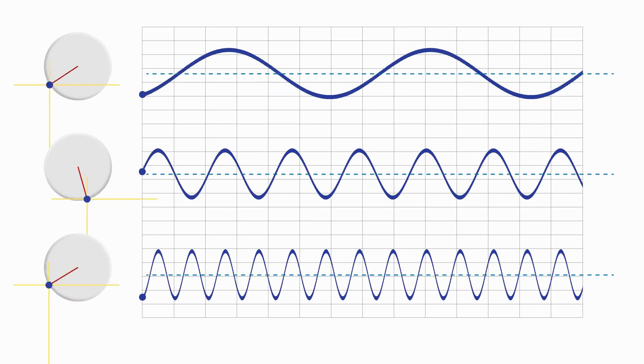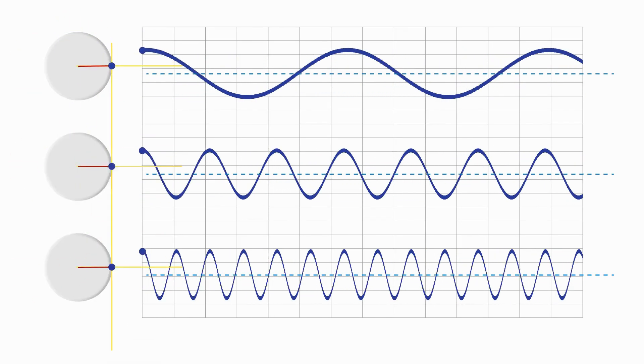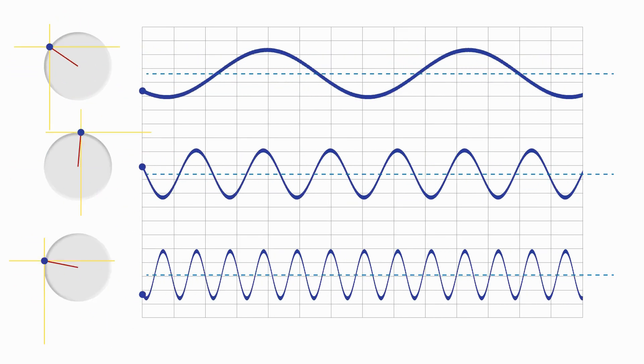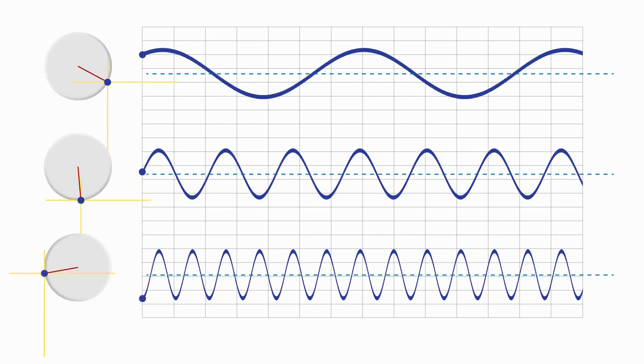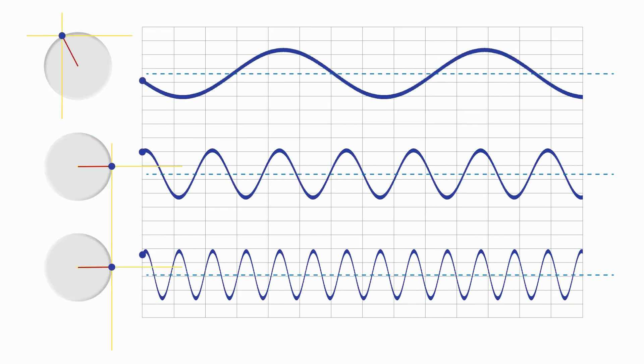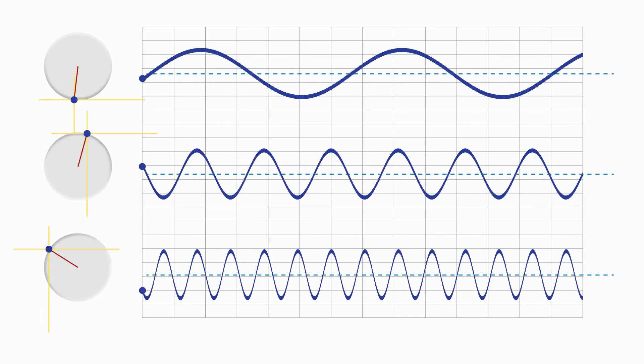However, this is three different shafts all rotating at different speeds. But when we analyze real world vibration from a single point on a machine, there's only one shaft rotating at one speed. So where do we get all those different frequencies?